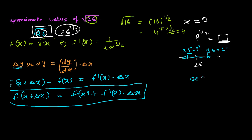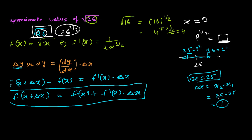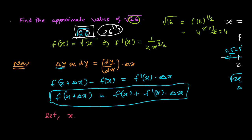So we let x = 25. Then Δx is the increment — that is x₂ − x₁ = 26 − 25 = 1. This means from 25, how much bigger is 26 (whose root we want to find). The increment is 1.